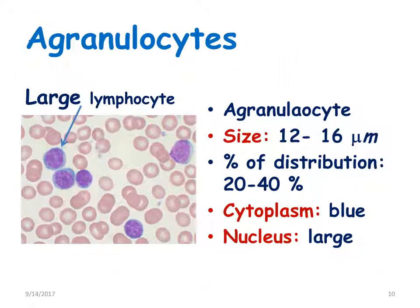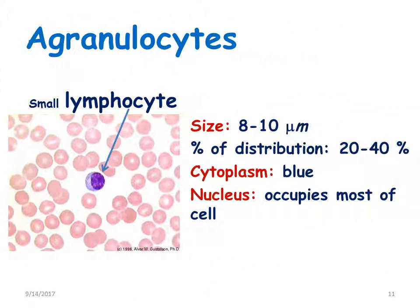Now let us look at the agranulocytes. The large lymphocyte is 12 to 16 micrometers in diameter. The percentage distribution for all lymphocytes together is 20 to 40%. Cytoplasm is blue in color with a single large nucleus. The small lymphocyte is 8 to 10 microns in diameter, with the same percentage distribution of 20 to 40%. Normally we don't differentiate between large and small lymphocytes — together they are considered as lymphocytes. The nucleus occupies most of the cell.